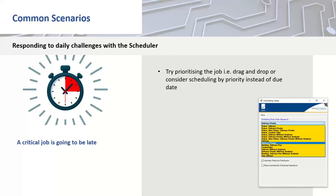Scenario three: a critical job that we expected to deliver on time is now going to be late — perhaps due to a machine breakdown. We want to see if there's any chance to still deliver it on time. Options include: drag and drop — move the job to the front and see what it affects and whether it gets it on time. Alternatively, reschedule by priority — give the critical job a high priority and schedule down to lower priority jobs. You wouldn't do that for every single job, but for high-priority jobs priority scheduling is a useful tool. You can then see the consequence and decide whether it's the right thing to do.